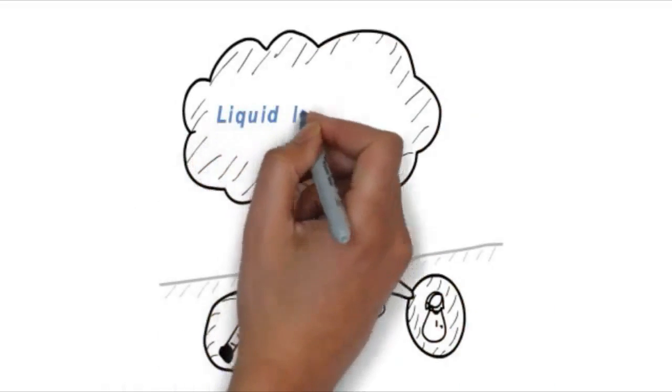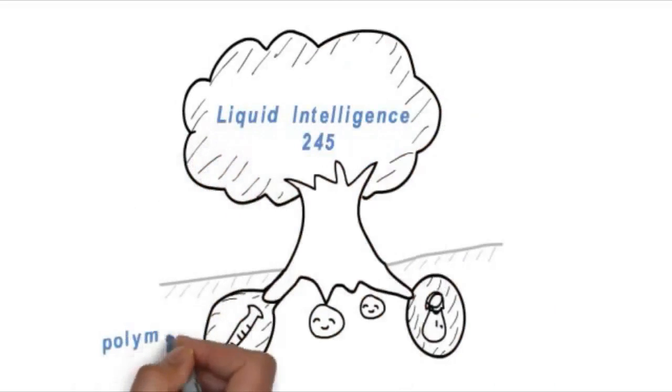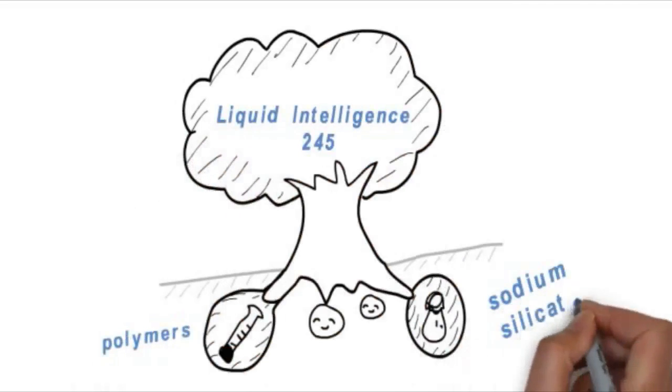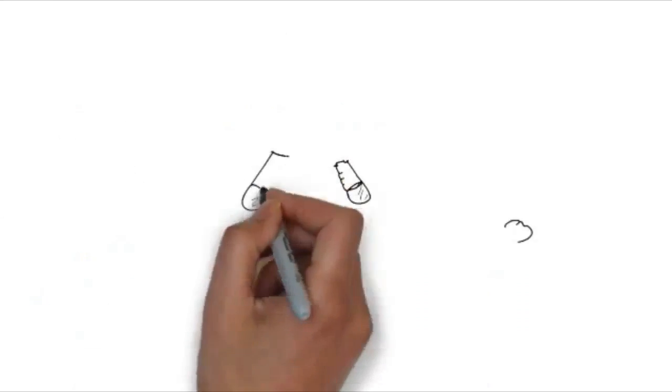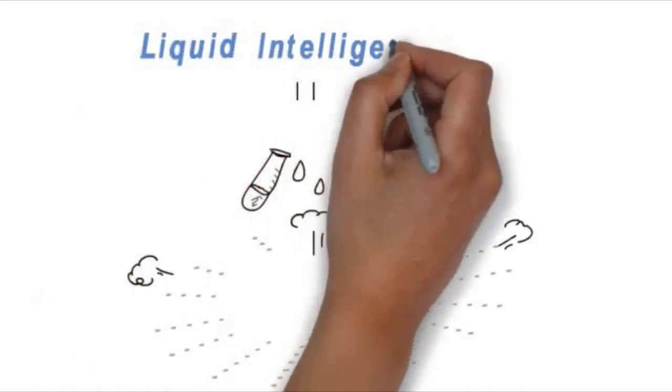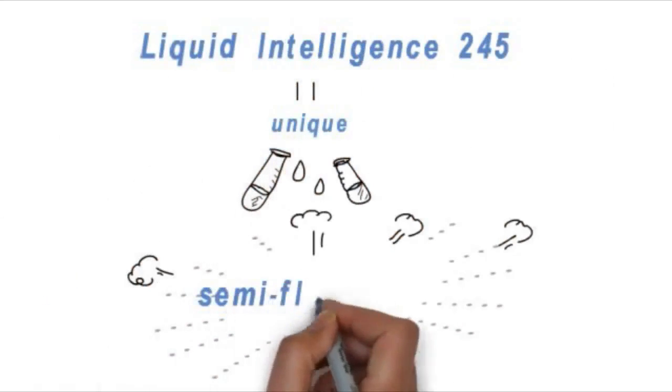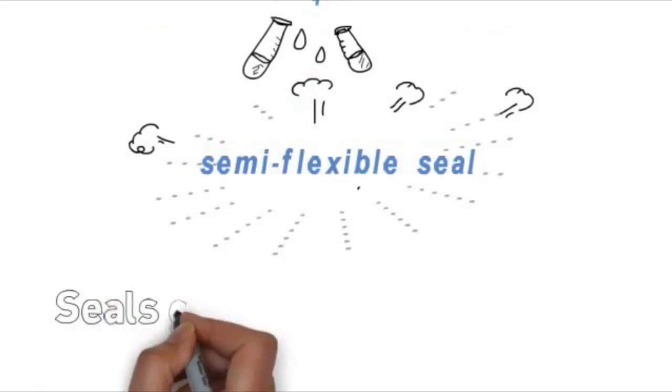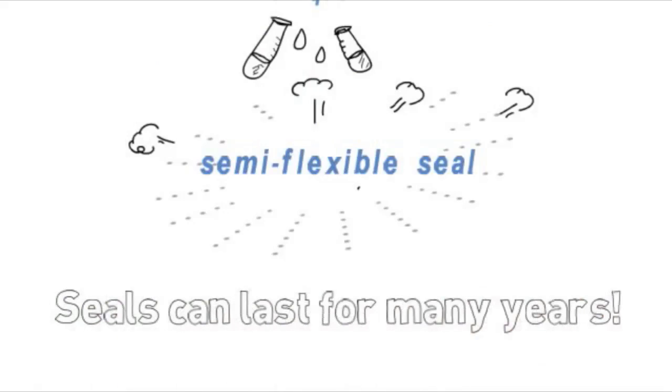The product is called Liquid Intelligence 245. It's a combination of high temperature polymers and sodium silicate. This unique chemical combination produces a semi-flexible seal that will move and give with the head and will not quickly deteriorate with heat and time. Seals can last for many years.